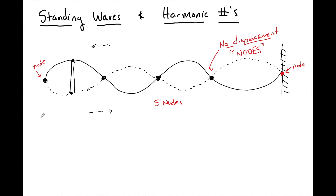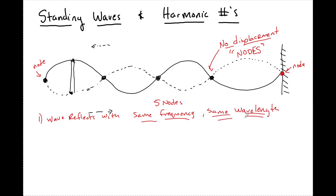Now the definition of the standing wave and how a wave forms — this is testable information. This is when a wave reflects with the same frequency, therefore the same wavelength, and here's the big one that students sometimes forget: it also has to have the same amplitude. As a review, amplitude is the distance from the equilibrium point. This would be the equilibrium point of this wave, and this right here is amplitude.